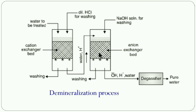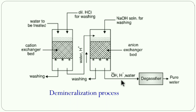The anion exchanger resin releases OH⁻ ions in exchange for the captured anions. The water coming out contains H⁺ and OH⁻ ions only, which combine to form pure water. All cations are captured in the first bed and all anions in the second, so no impurities remain. This water can then be passed through a degasifier for removal of any gaseous impurities such as CO₂ or O₂, yielding pure water of distilled quality.